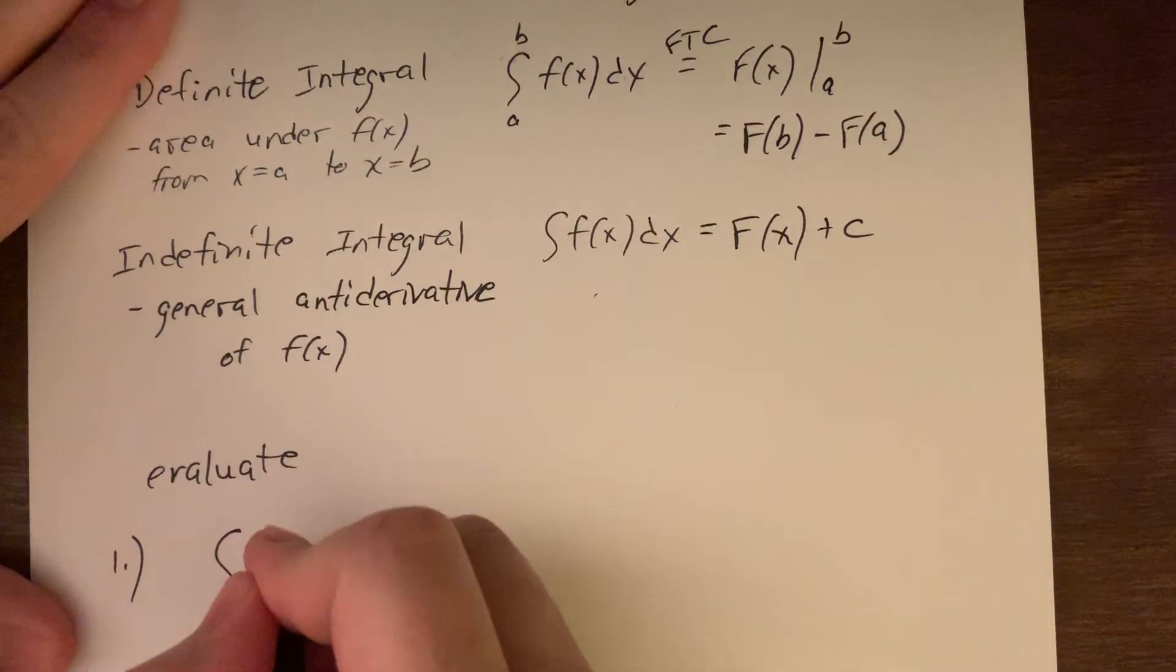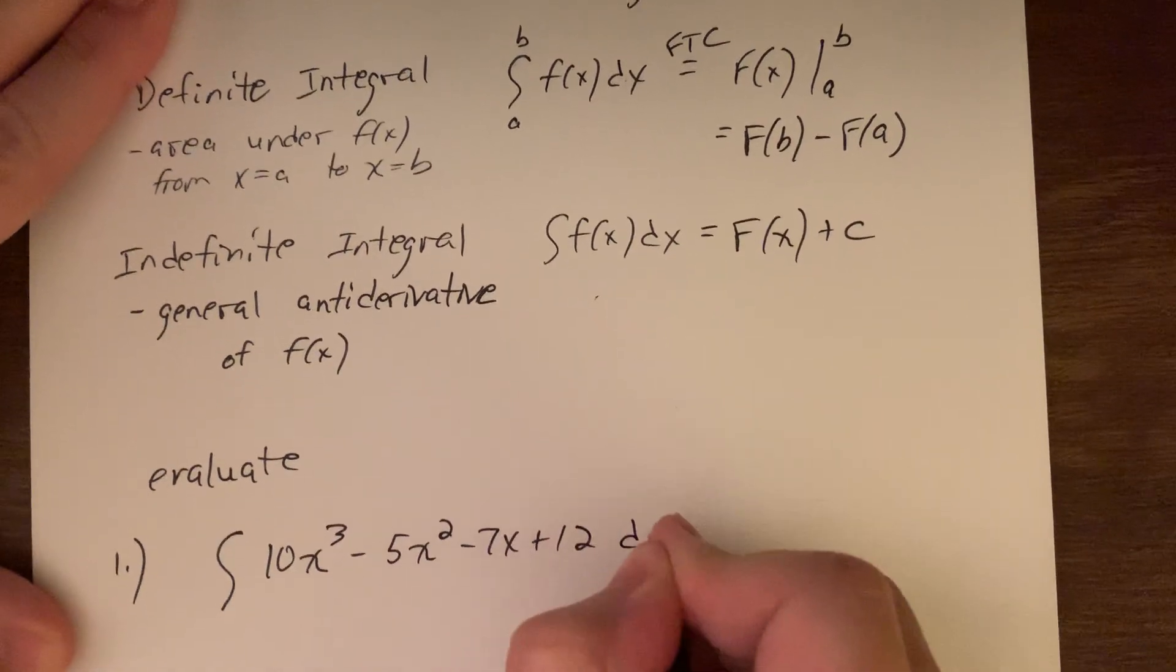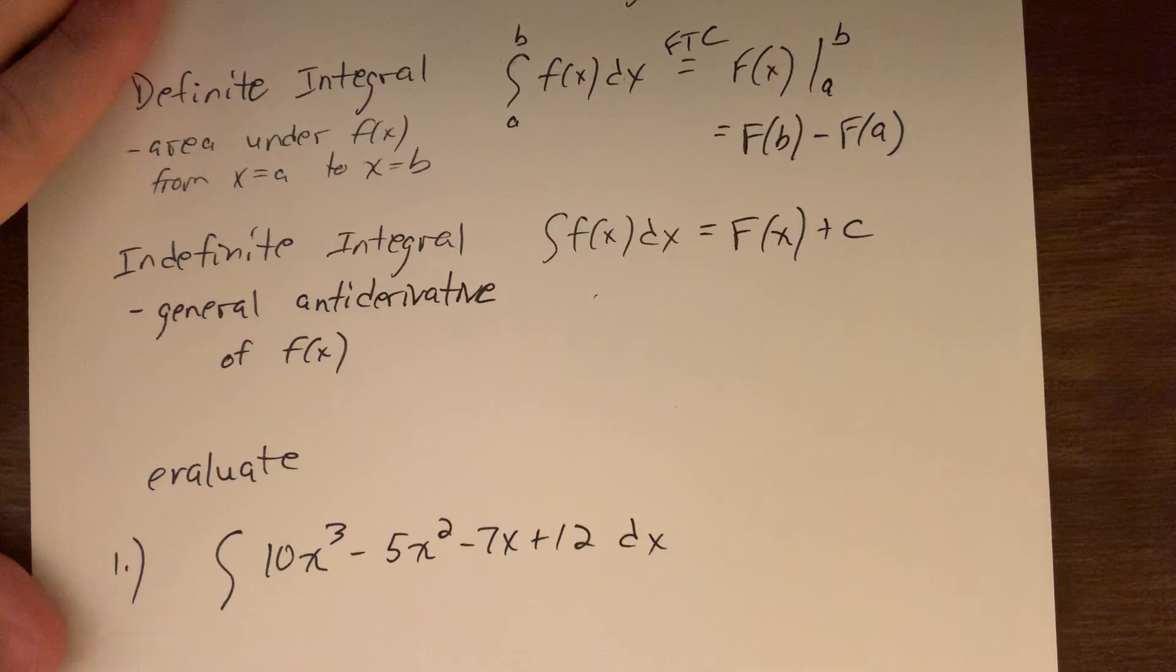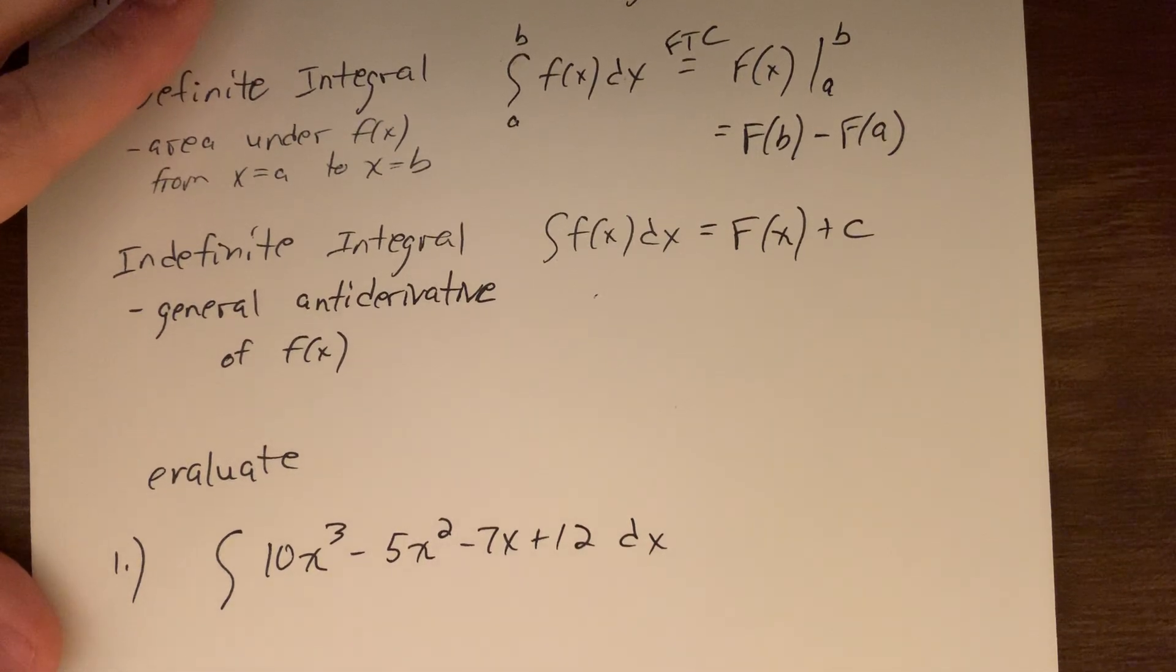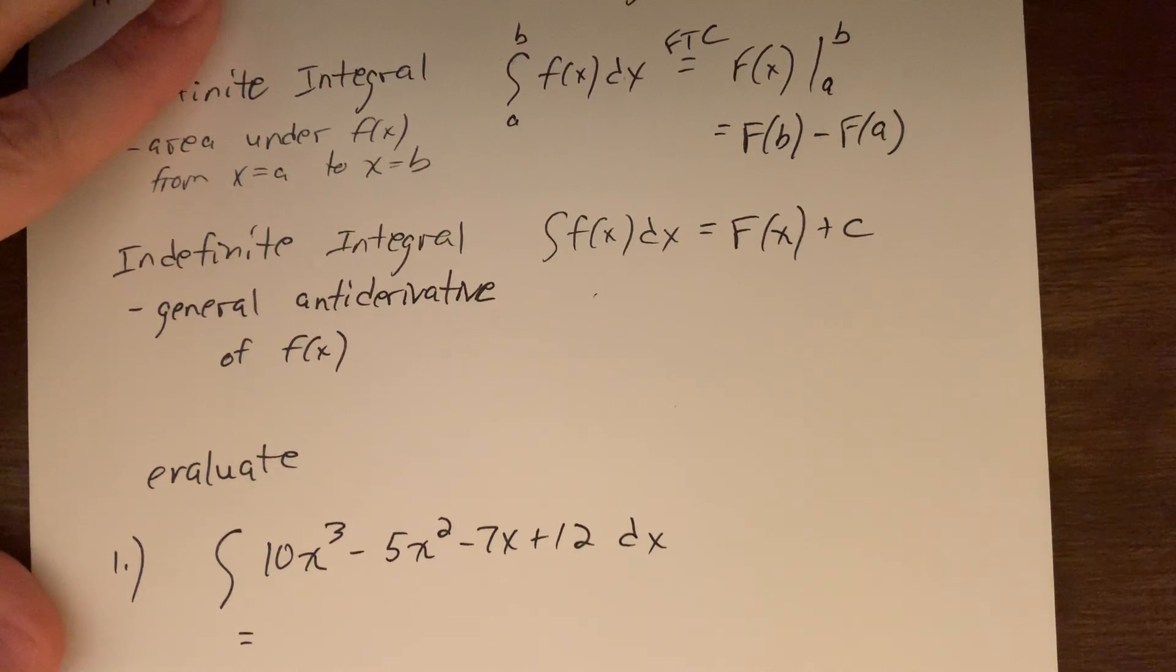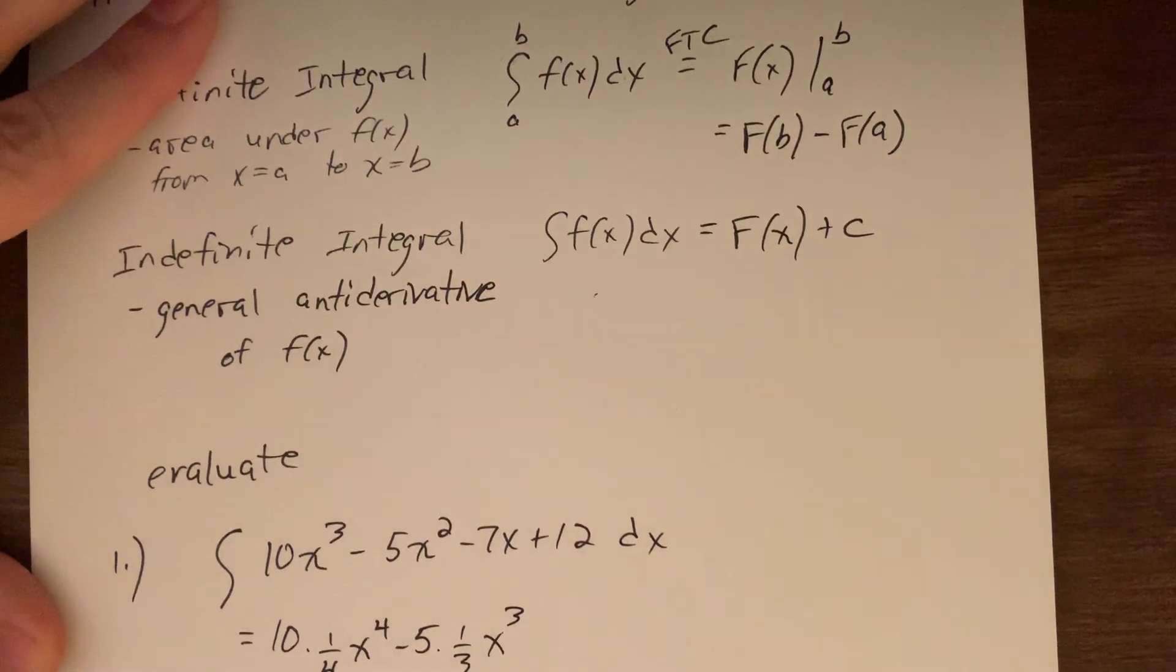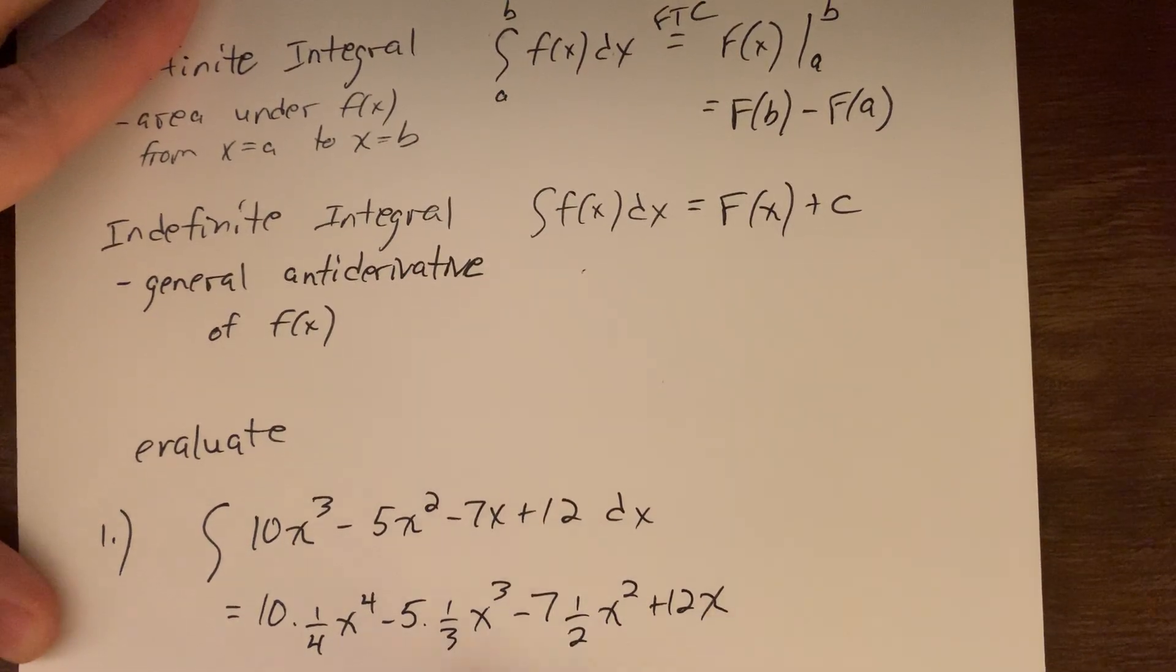So number one, if I tell you to evaluate the integral of 10x³ - 5x² - 7x + 12 dx, there are no bounds. So all this is saying is find the general antiderivative of this function. Well, in this particular one, there's not much to it. Everything's separated by addition subtraction. So I just get to do a nice methodical move going left to right. Being very literal here, I know we've talked about cleanup. But just first thing being very literal, the 10 pushes along, I get a 1/4 x⁴ for the anti of x³. The minus 5 pushes along, I get a 1/3 x³ for the anti of x². The minus 7 pushes along, I get a 1/2 x² for the anti of x, and then the plus 12x.